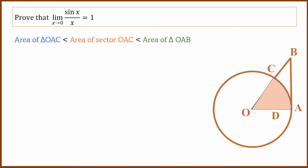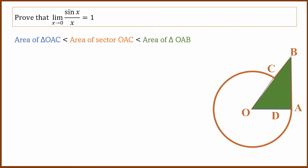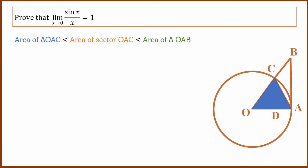This area is less than triangle OAB. OAB is the third triangle. Obviously sector area is less than this third triangle. So the small triangle's area is less than the sector's area, which is less than the big triangle's area.